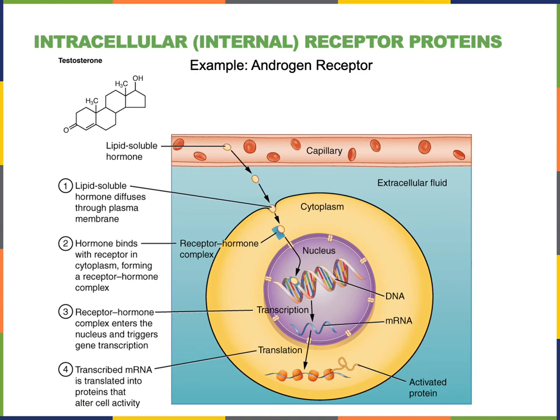The chemical message that binds to the receptor can be referred to as a ligand. So either a hormone, a neurotransmitter, or a growth factor could be referred to as a ligand. The ligand binds to the receptor protein and activates it, and then the activated receptor protein will produce an intracellular signal.